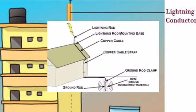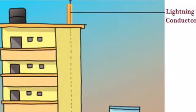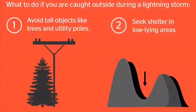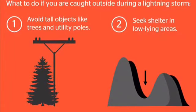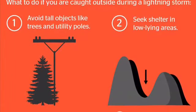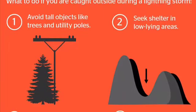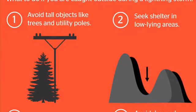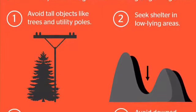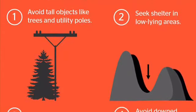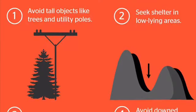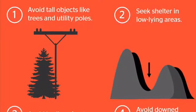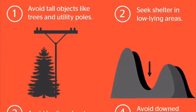When lightning strikes, the extra charges flow through the metal rod to the earth without causing any damage to the building. Let us now discuss the safety measures we can take during lightning. Lightning can hit anyone in the wrong place at the wrong time, and it can also hit the same place many times, so we need to take precautions.